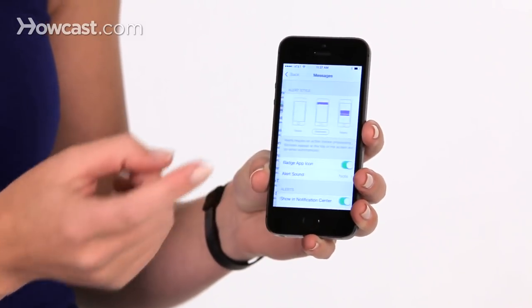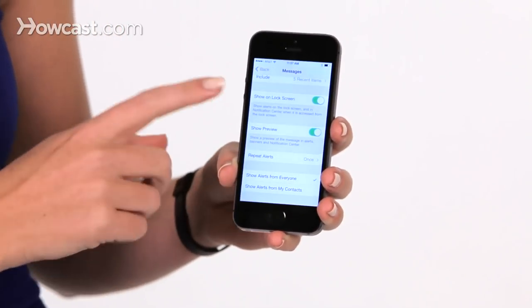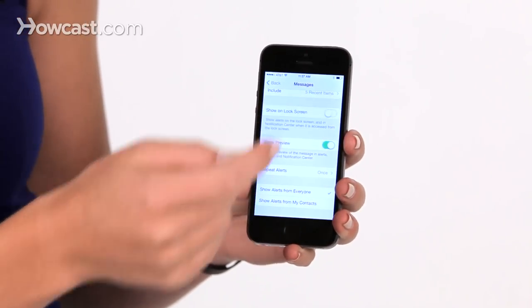So I can tap on messages. I can scroll down, and then I have the option to show on lock screen. So for me, I can go ahead, turn that off,